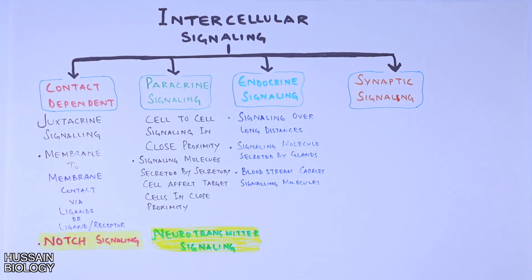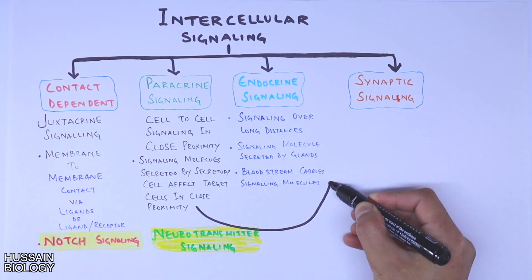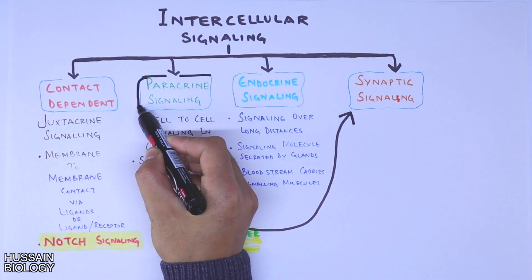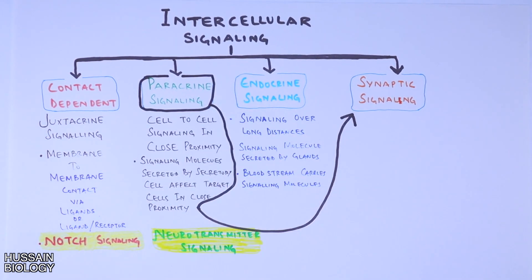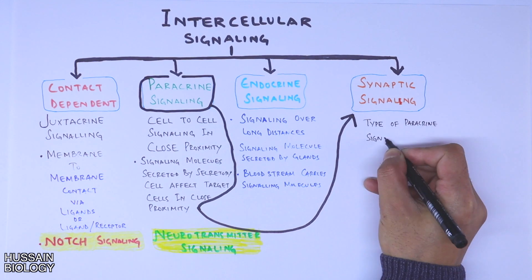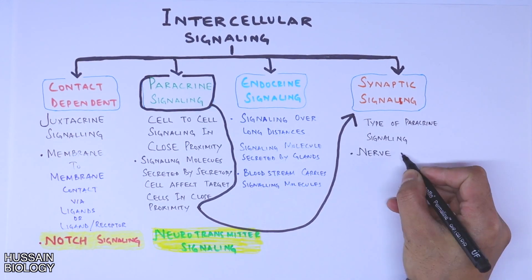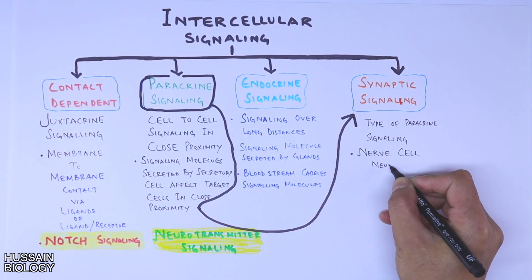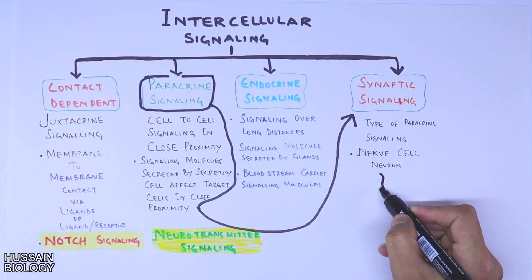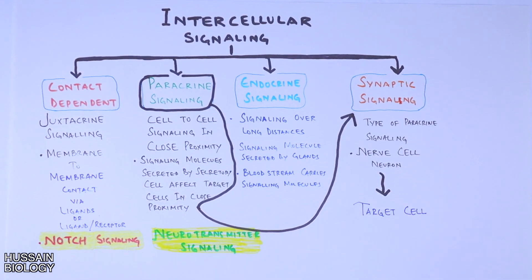And at last we have synaptic signaling. It is a special type of paracrine signaling, but in synaptic signaling the signaling occurs between the nerve cell or neuron and the target cell.